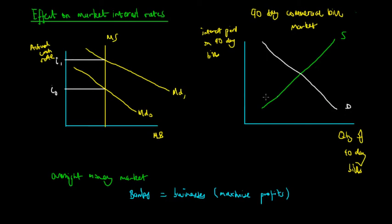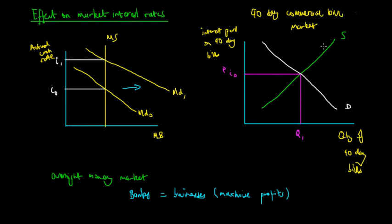The demand curve is downward sloping because at a low level of interest paid, the quantity demanded of commercial bills will actually increase. So the equilibrium quantity and equilibrium price of bills are Q1 and PI0. When the interest paid in the overnight money market increases due to a rightward shift in demand, those trading the 90-day bill market have less incentive to trade there and more incentive to trade in the overnight money market. This is relative prices — an increase in the relative price of the overnight market sends price signals to suppliers of 90-day bills, as they are closely related substitute products.